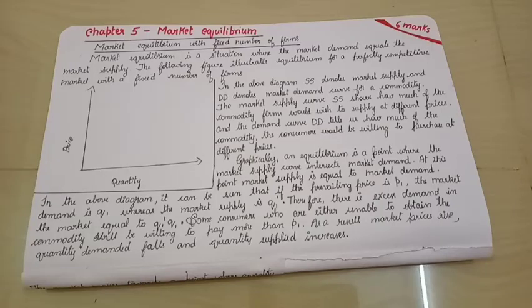Hello everyone, welcome back to CMAS Academy. In today's video, we are going to discuss another 6 marks question from chapter 5, Market Equilibrium. That is, explain market equilibrium with fixed number of firms.